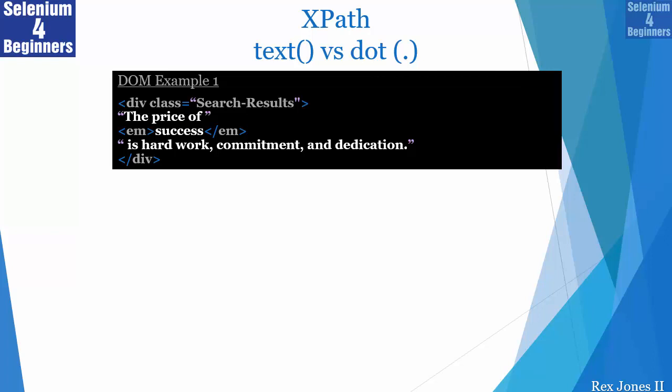In this example, we want to find 'success'. First, we locate class 'search results', then try to locate 'success'. Notice success is between the EM tags. EM stands for emphasis, which boldfaces words on a web page. In order to find success, we will not use the text function but use the dot. The text function will not find success because the text function locates content in a text node. A text node only contains a string, and the strings are located inside quotes.